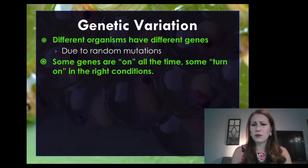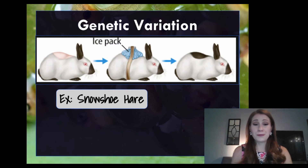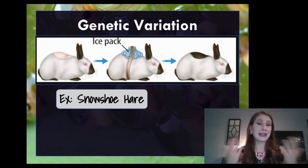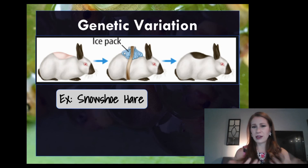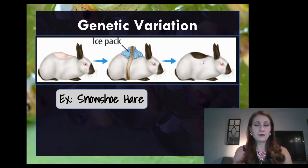Here's an example of how some genes might turn on in the right conditions. This is a snowshoe hare — it's a type of bunny rabbit that sometimes lives where it's cold. In this experiment, somebody took a snowshoe hare and shaved the fur off its back, then added an ice pack to the area, simulating the fact that winter is coming. Due to this, that snowshoe hare grew darker, potentially thicker fur in that area, and the gene for that brown fur was turned on due to the cold.